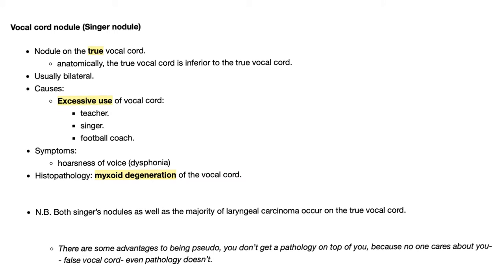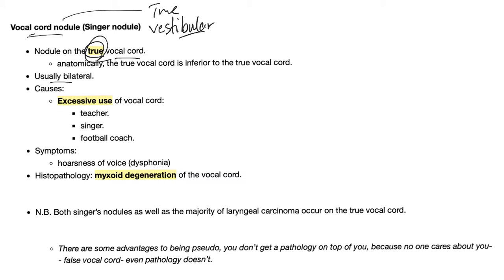Let's start with singer's nodule, or vocal cord nodules. They are nodules on the true vocal cord — when we say vocal cord, we mean the true vocal cord. When we say vestibular fold, this is the false vocal cord. Usually bilateral. Where is the true vocal cord? If we take a coronal section, here is your larynx.